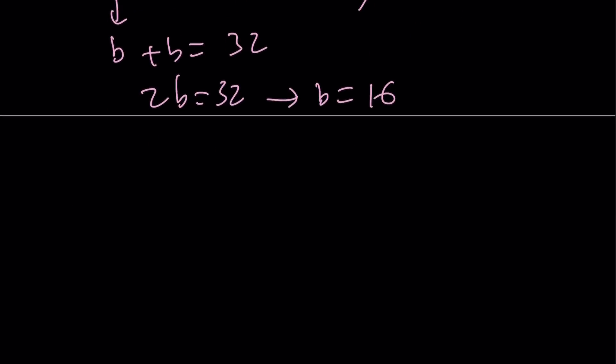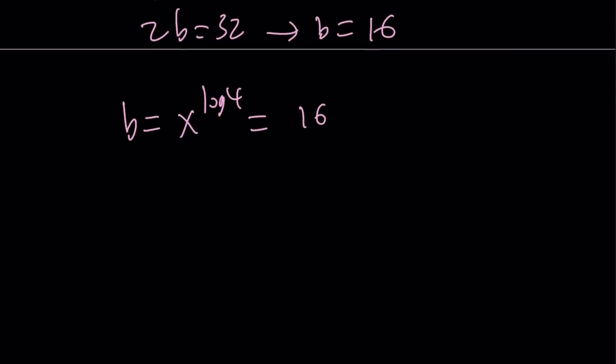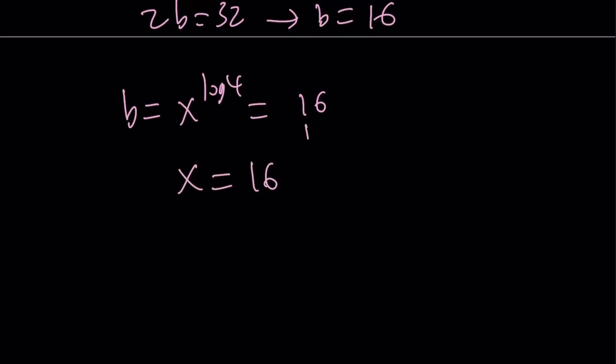Now, what does b equal? b is equal to x to the power log 4, and that's equal to 16. How do you find x from here? Easy. You can just go ahead and raise both sides to the power 1 over log 4, but you still haven't found x. Let's go ahead and simplify this.